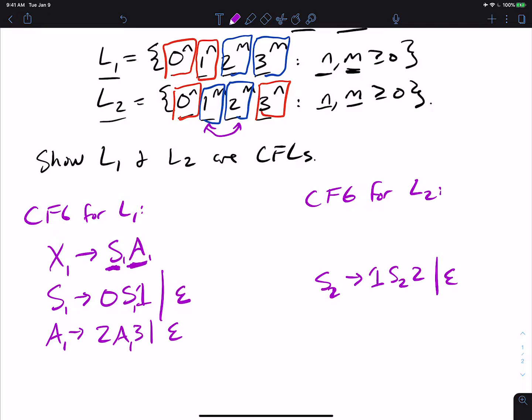But then we got to be able to make 0 to the n, 3 to the n. But you can think of s2 as the middle of the string, as once we make the 0s and 3s, then we need to move inside and make the 1s and 2s. So we can accomplish this by having a variable a2 make 0, a2, 3. So that makes 0 to the n, 3 to the n.